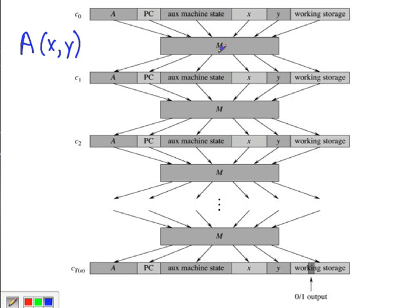Cook showed that circuit-SAT is NP complete by showing that for any problem in NP, any problem in NP will have an algorithm A that will give a description of the problem X and a certificate Y will decide that problem. So imagine there's a machine that can run the algorithm, and that machine state will be expressed by the description of A, the algorithm, the program counter, other machine state, the inputs X and Y, the problem and the certificate, and other working storage.